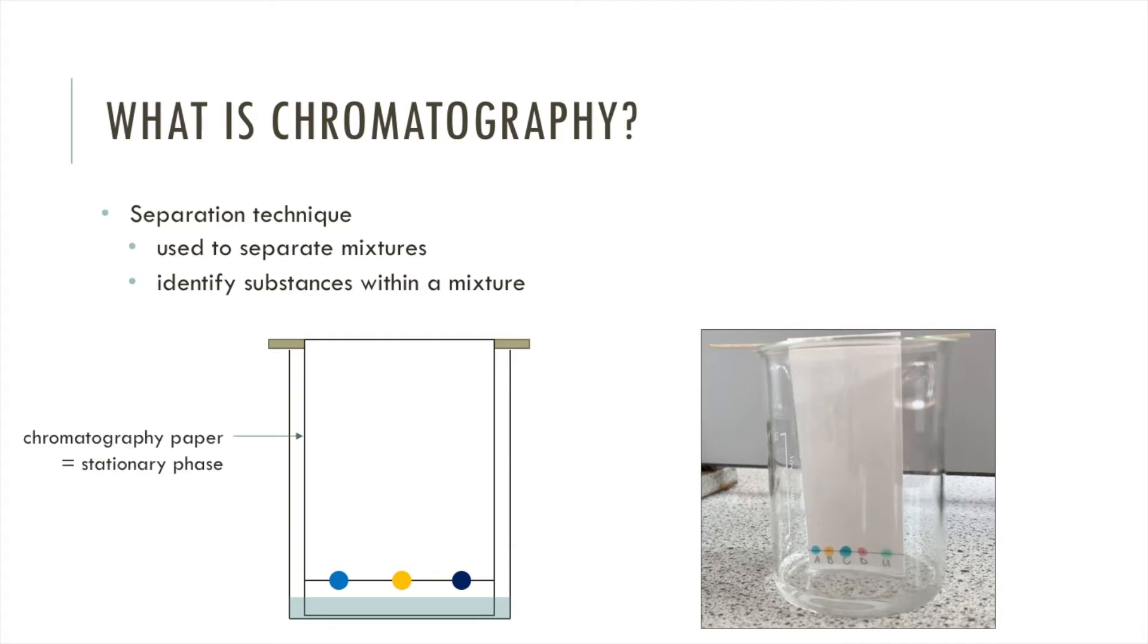Here is our chromatography paper and we call that the stationary phase because it doesn't move. Here is the solvent and this is our mobile phase because it does move and in fact it's going to flow through this stationary phase.